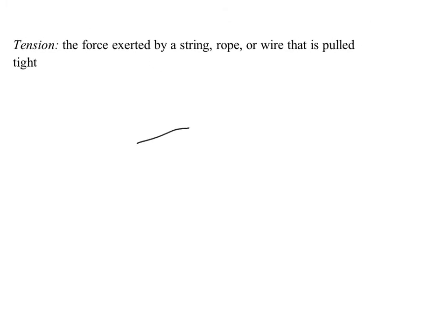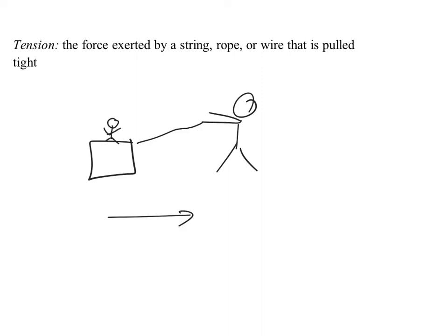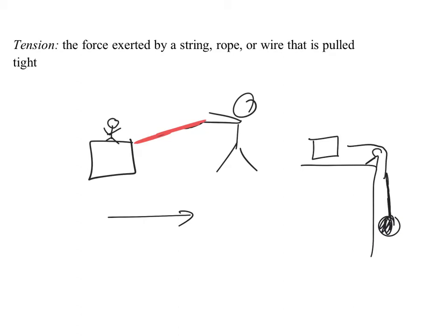Think of tying a rope to a sled: as you pull the rope, that force is transmitted to the sled. Another example is the classic Atwood machine, where a mass hangs over a pulley. The string transmits a vertical downward force due to the hanging object's weight into a horizontal force acting on a mass on a surface. The pulley can change the direction of the force being applied.